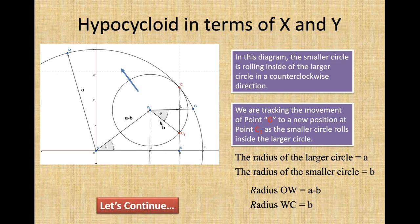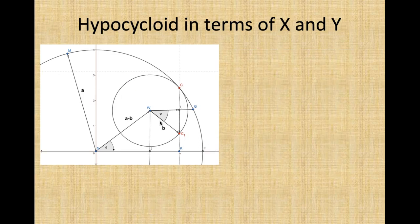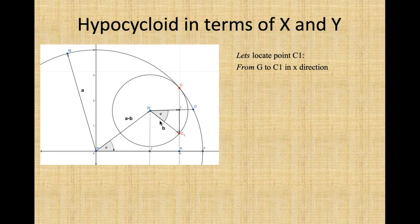Let's continue. Let's locate point C1 from G to C1 in the x-direction. We have x is equal to (A minus B) cosine theta plus B cosine phi. That's the x-direction from 0 to there.